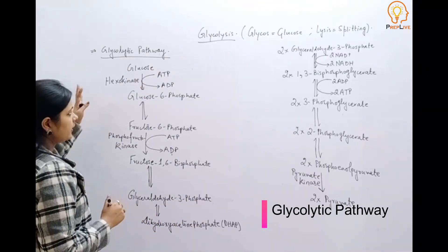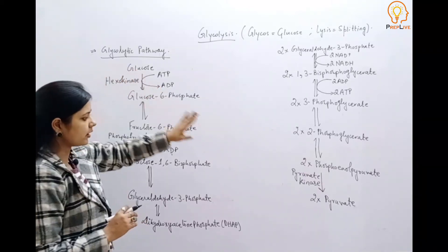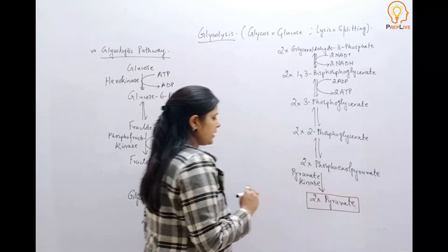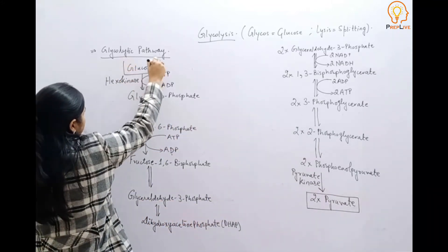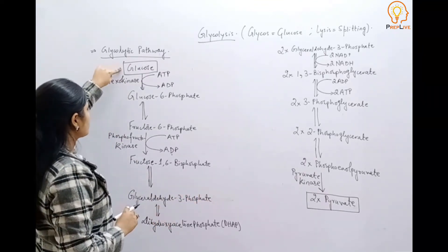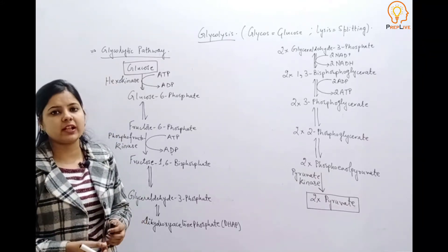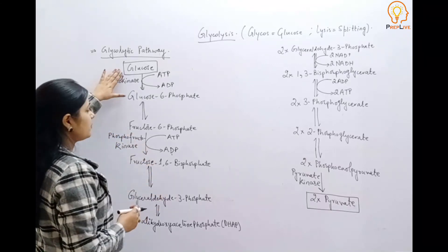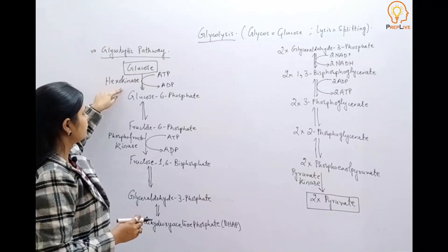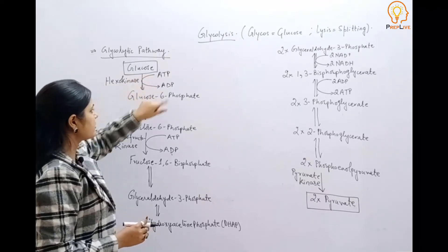This whole glycolytic pathway starts from glucose, and the end product results in two molecules of pyruvic acid. Starting with glucose: the first step is the conversion of glucose into glucose-6-phosphate, which is a phosphorylation step. Glucose obtained from sucrose is phosphorylated with the help of enzyme hexokinase to give rise to glucose-6-phosphate. Here, one molecule of ATP is utilized.